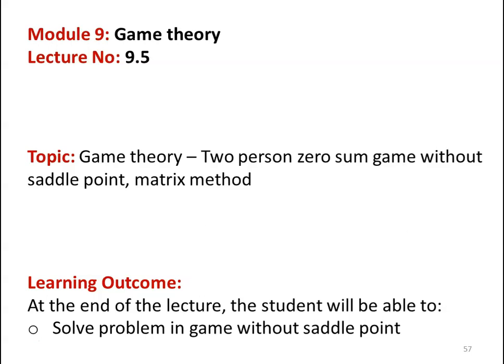In the earlier lectures we solved the 2×2 zero-sum game without saddle point using the arithmetic method and the graphical method. And in this lecture we are going to discuss the matrix method to solve the game problem. The learning outcome: at the end of the lecture, the student will be able to solve a problem in a game without saddle point using the matrix method.